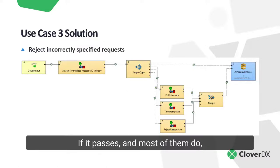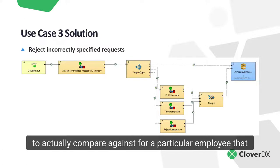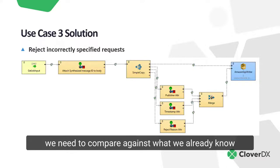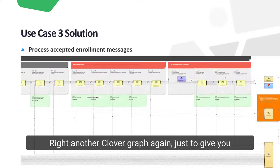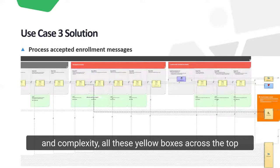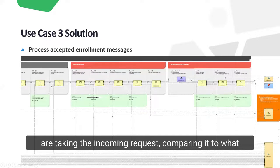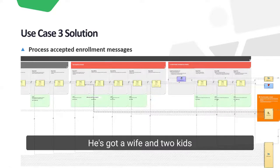If it passes — and most of them do — this is just sort of a front gate. We have a valid 834 message that we need to compare, for a particular employee, against what we already know about that employee and build essentially a change file. Another Clover graph — just to give you a taste of what these pipelines can look like in complexity. All these yellow boxes across the top are taking the incoming request, comparing it to what we already know about the employee. He's on the Gold plan, he's got a wife and two kids, and this is the request he's making.